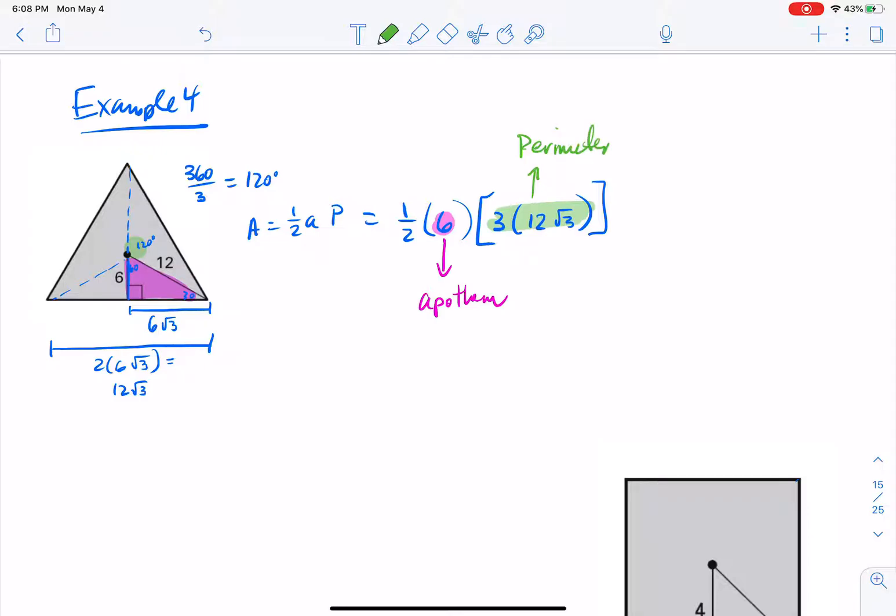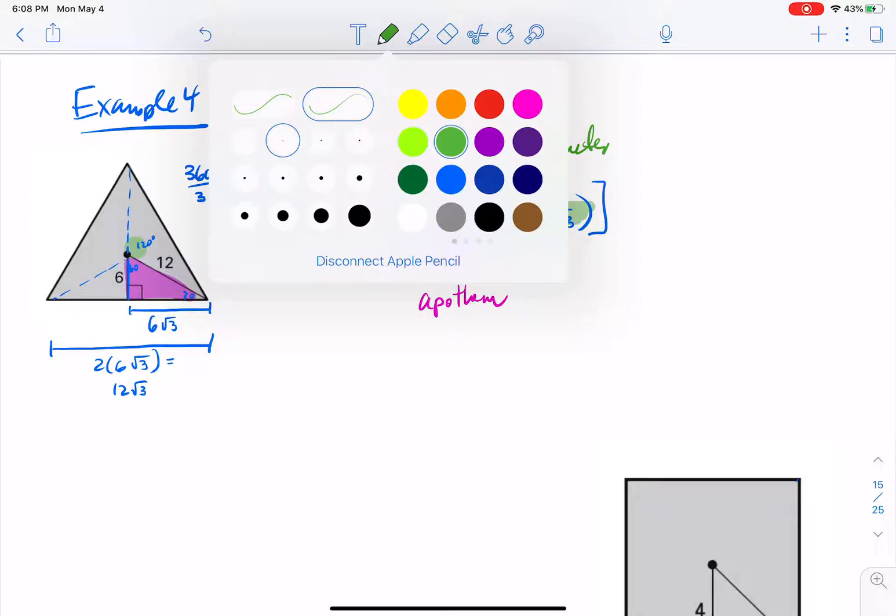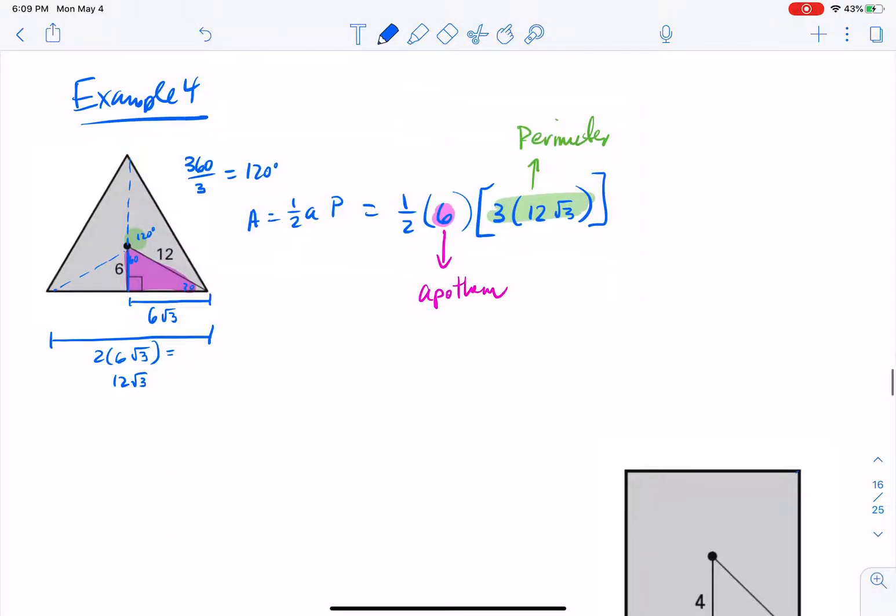Let's plug our stuff into our formula. One-half of the apothem length, the apothem was 6, times my perimeter, and my perimeter is going to be 3 times each one of my side lengths, which is 12 square root of 3. And now we just want to use some arithmetic and clean this up a little bit. Inside the brackets for the perimeter, I get 36 square root of 3, just multiplying the 3 and the 12 together. On the outside, taking half of the 6, I get 3. And then 3 times 36 is 108 square root of 3. And you can leave it in an exact form like this, but I would ask that you throw in a unit squared, since it is area.